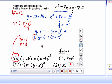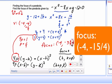So the focus here is simply the x coordinate of the vertex, negative 4, plus 1 fourth. So that's negative 3 and 3 fourths, or if you wrote that as negative 15 over 4 that would be fine as well.